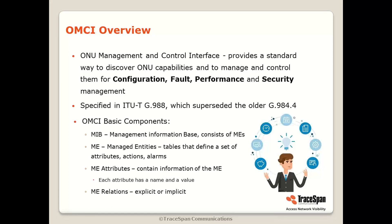The attributes are the values within the ME. An ME is a table with various rows, and each row is an attribute with a value. There are specific names depending on the type of ME, and the list of allowed values is defined in the standard. The type of value also depends on the type of attribute — some are numerical, some hexadecimal, some text, some ASCII, and some are tables.